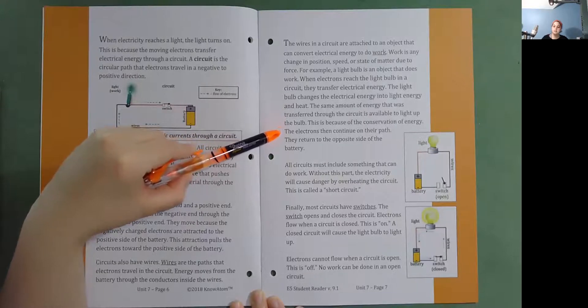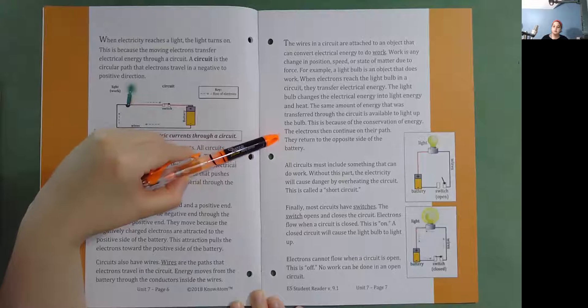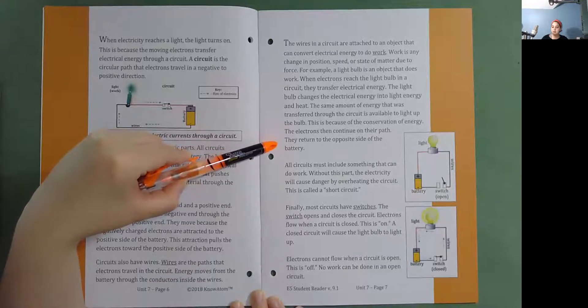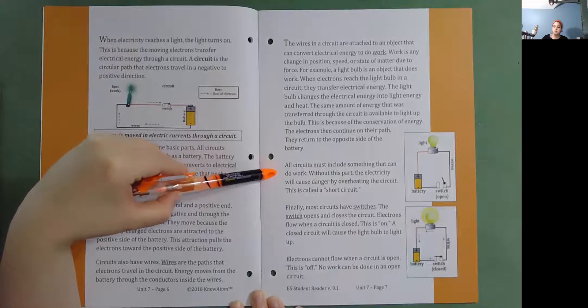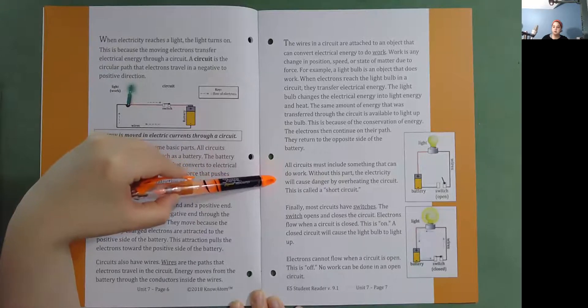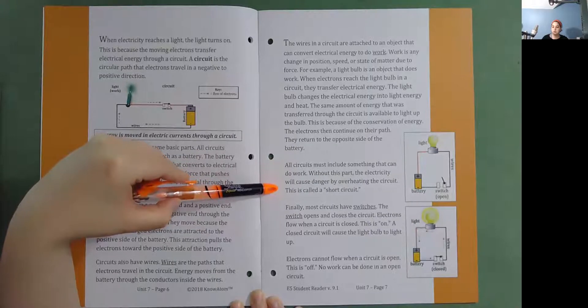The electrons then continue on their path. They return to the opposite side of the battery. All circuits must include something that can do work. Without this part, the electricity would cause danger by overheating the circuit. This is called a short circuit.